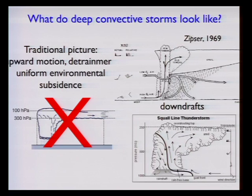You get air from the middle of the troposphere which can be cooled by the rain and pulled down. So we need to think about deep convection in a more complicated way than just the upward part of a cell.